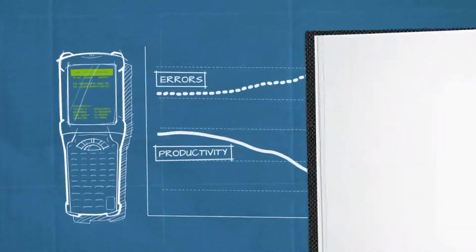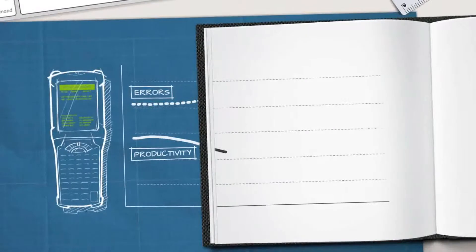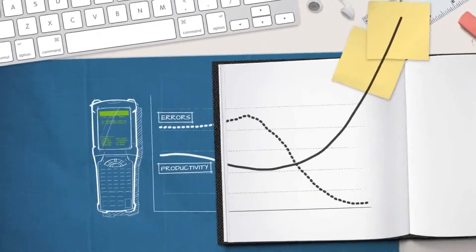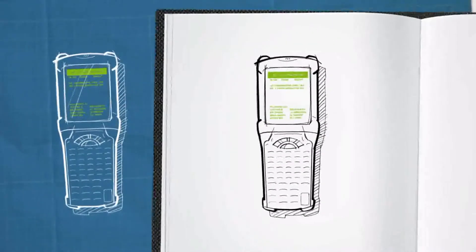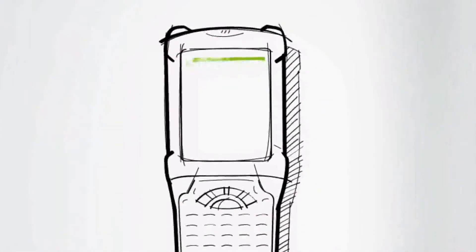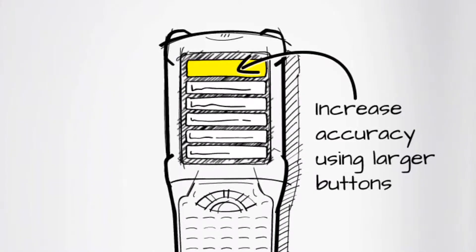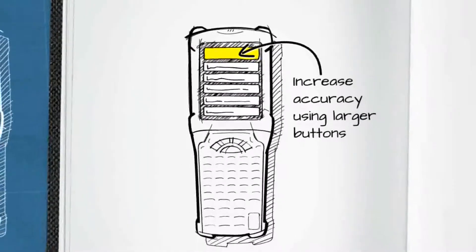Well then, what can we do about this? We need to increase productivity and decrease errors. Here's a thought. I'll modernize that green screen for starters, and put in big buttons that you see on most modern user interfaces. That should reduce errors and help with the productivity.